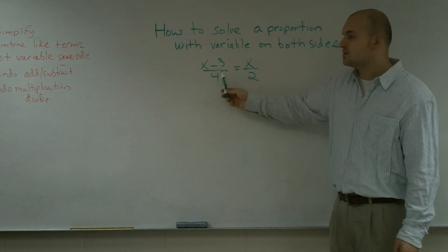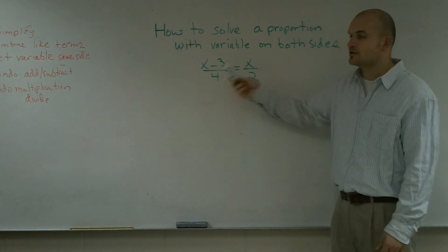So between four and two, what is the lowest number that both of these numbers go into? And I understand that's going to be four.